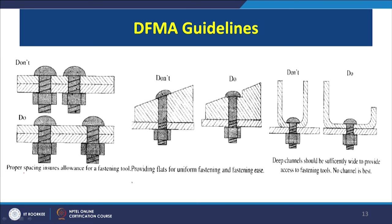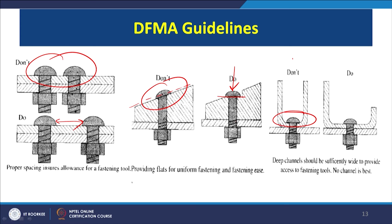Proper spacing ensures allowances for the fastening tool — if two fasteners are too close, the tool cannot access them easily. Provide flats for uniform fastening, since an inclined surface makes fastening difficult. Deep channels should be sufficiently wide to provide access to the fastening tool; if there is no channel at all, that is even better.